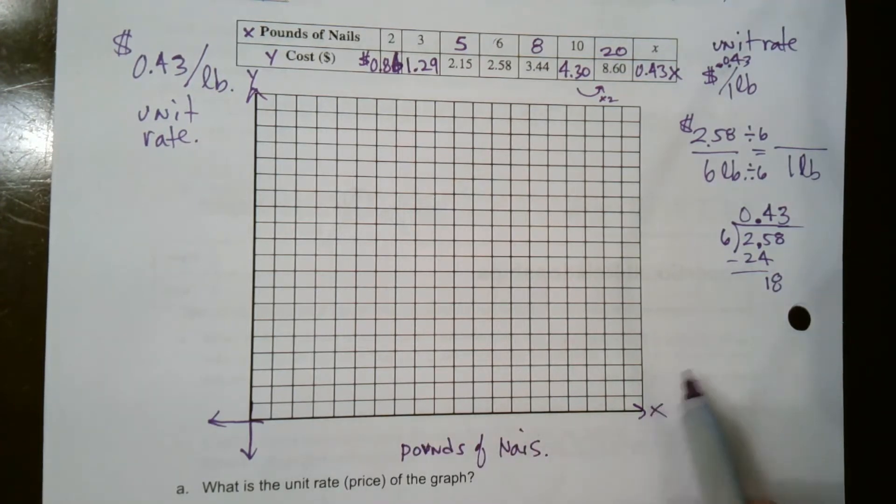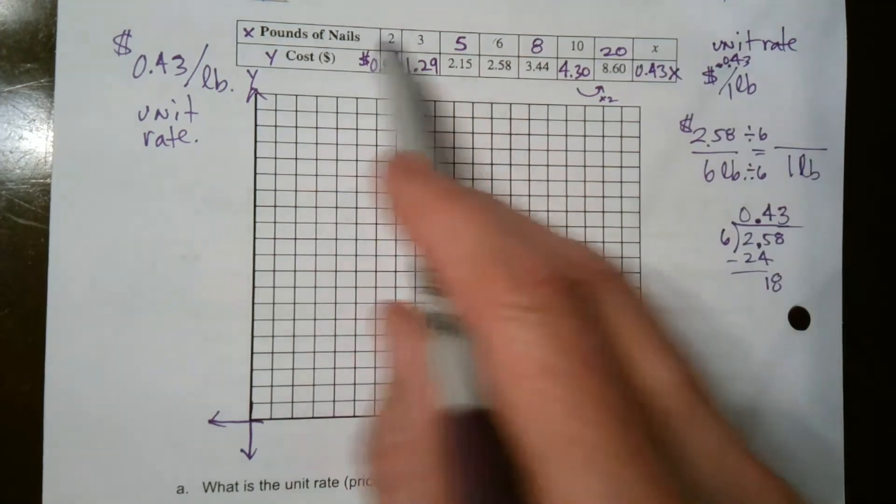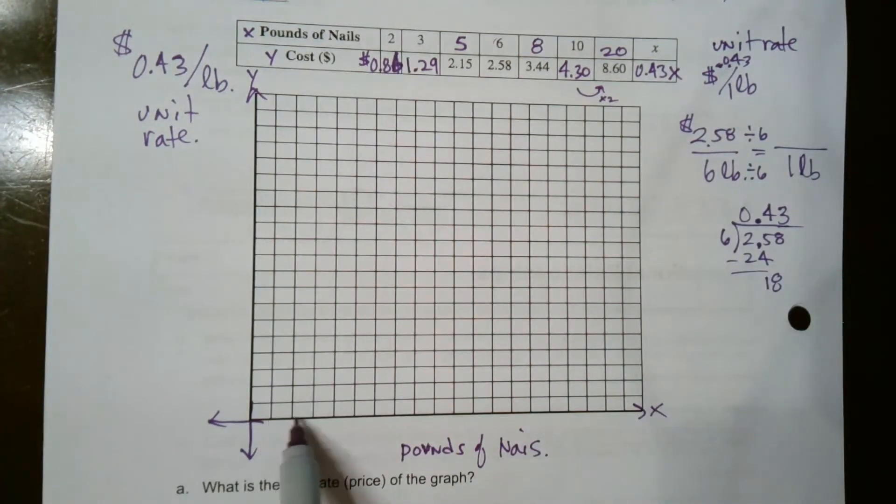I'm going to label this. This is going to be my pounds of nails. What would be my scale? If I want to get all the way up to 20 and graph everything, I can go by ones. I'm just going to count by twos, labeling the evens just to save room. As long as I know each mark is worth one, that's my pounds of nails on my X axis, on my horizontal axis.